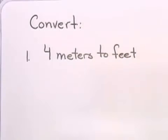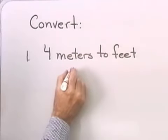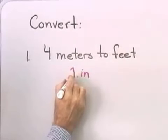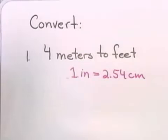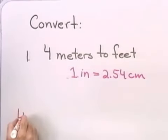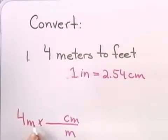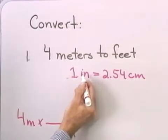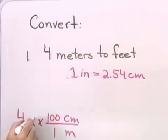Here's our first example. We want to convert 4 meters into feet. I'm going to start with meters and I want to end up with feet. As far as my conversions go, I know that 1 inch is equal to 2.54 centimeters. So I'll start with 4 meters and multiply by something that will allow meters to divide out and give me centimeters — there are 100 centimeters in every 1 meter, so that will take care of my meters.